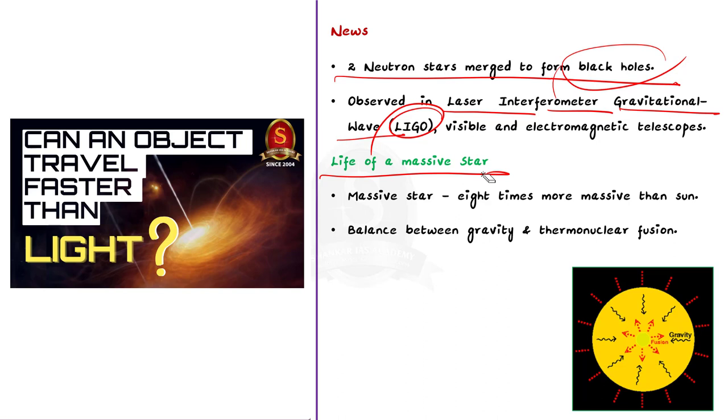A star can be called a massive star when it is at least eight times more massive than our sun. A star maintains its stability through a fine balance between its own gravity, which holds it together, and the outward pressure from ongoing thermonuclear fusion processes taking place at its core.